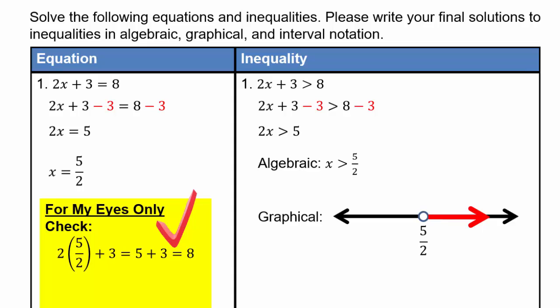Interval notation for that would be a round bracket or parenthesis for 5 halves because 5 halves is not included, and then infinity — never included because that's a concept, not a number — but it basically means 5 halves and up. So all real numbers bigger than 5 halves; that's what that notation means.